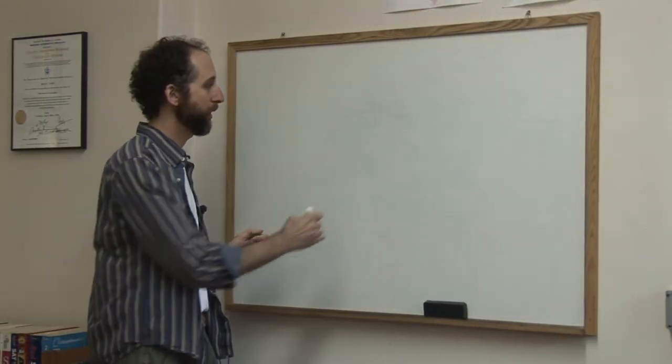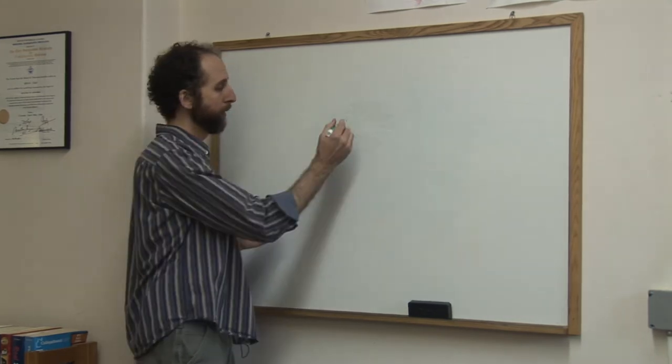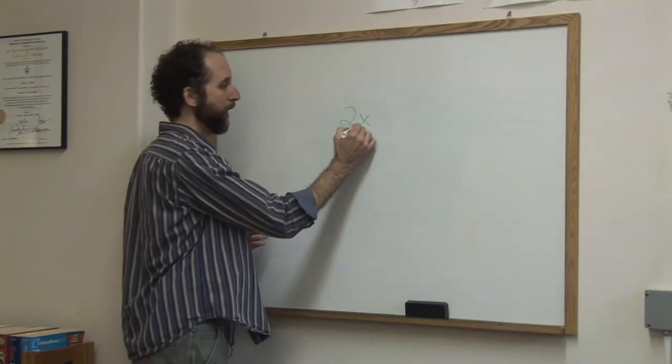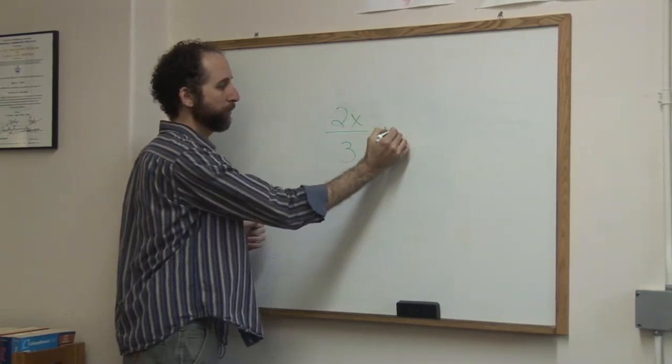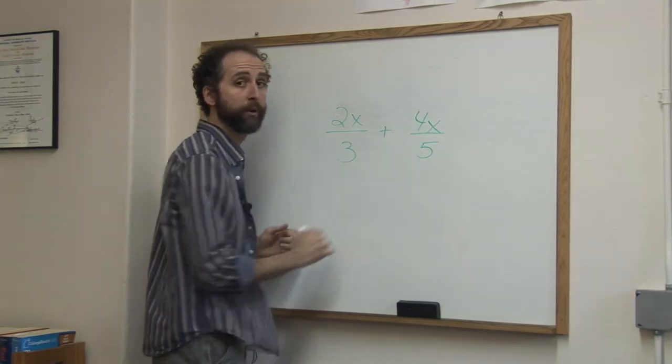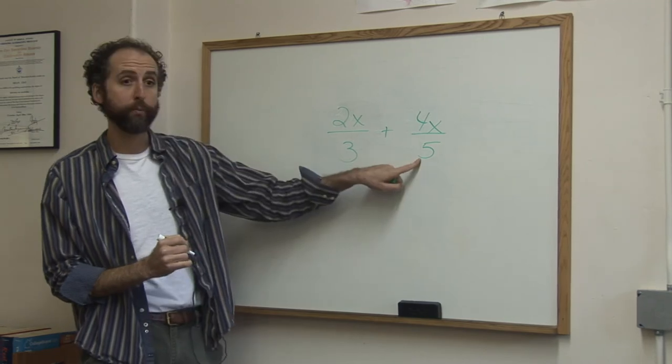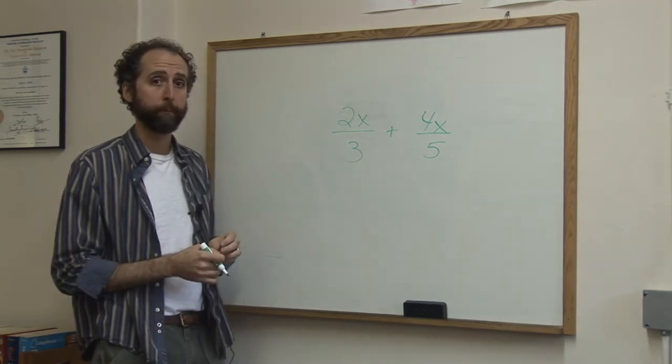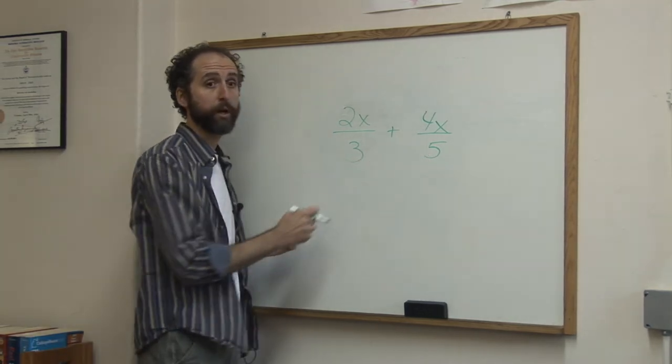Let's take a look at a second example where the denominators don't match up. Say you've got 2x over 3 plus 4x over 5. This time, the denominators don't match, so we can't just add right off the bat. We're going to have to make these a common denominator.